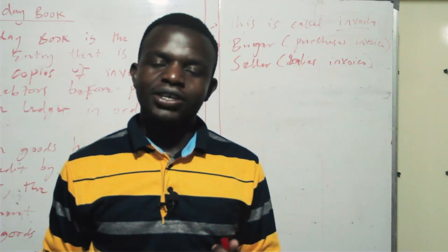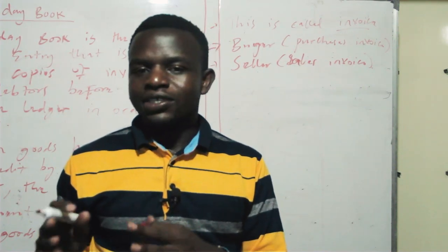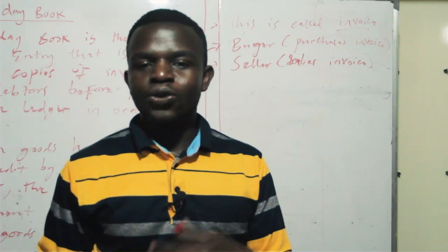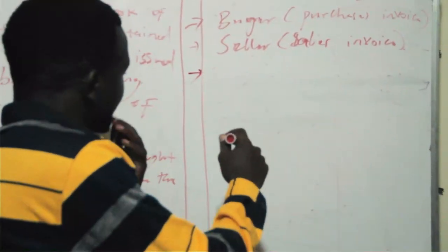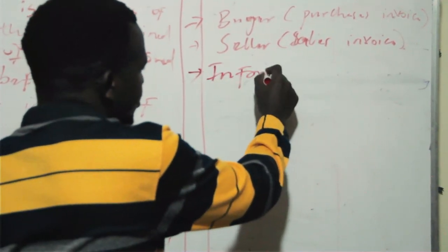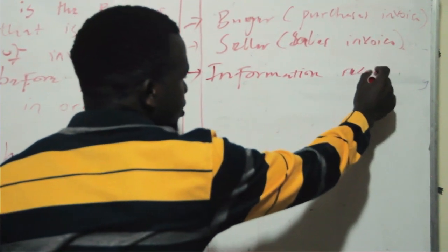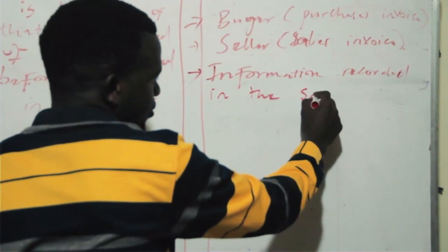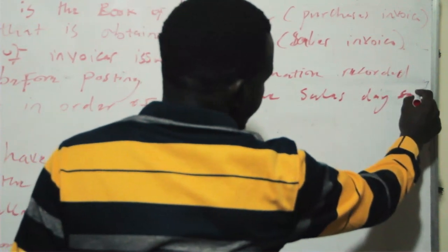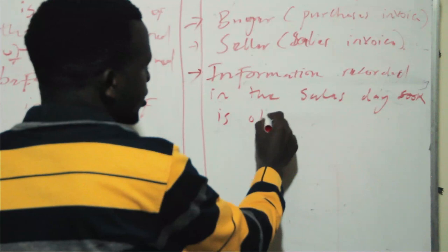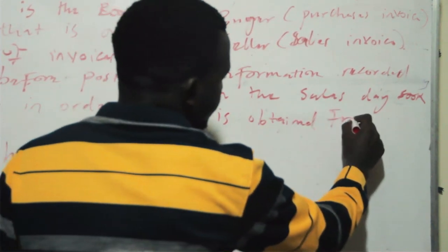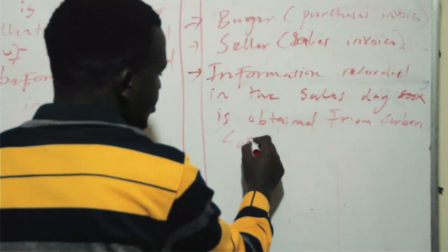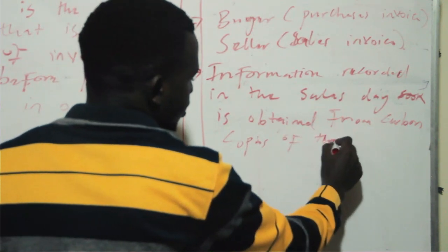That's the point you need to take into consideration. All the details recorded in the sales daybook — the information is obtained from carbon copies of the sales invoice, since the original goes with the buyer. So the information recorded in the sales day book is obtained from carbon copies of the sales invoice.